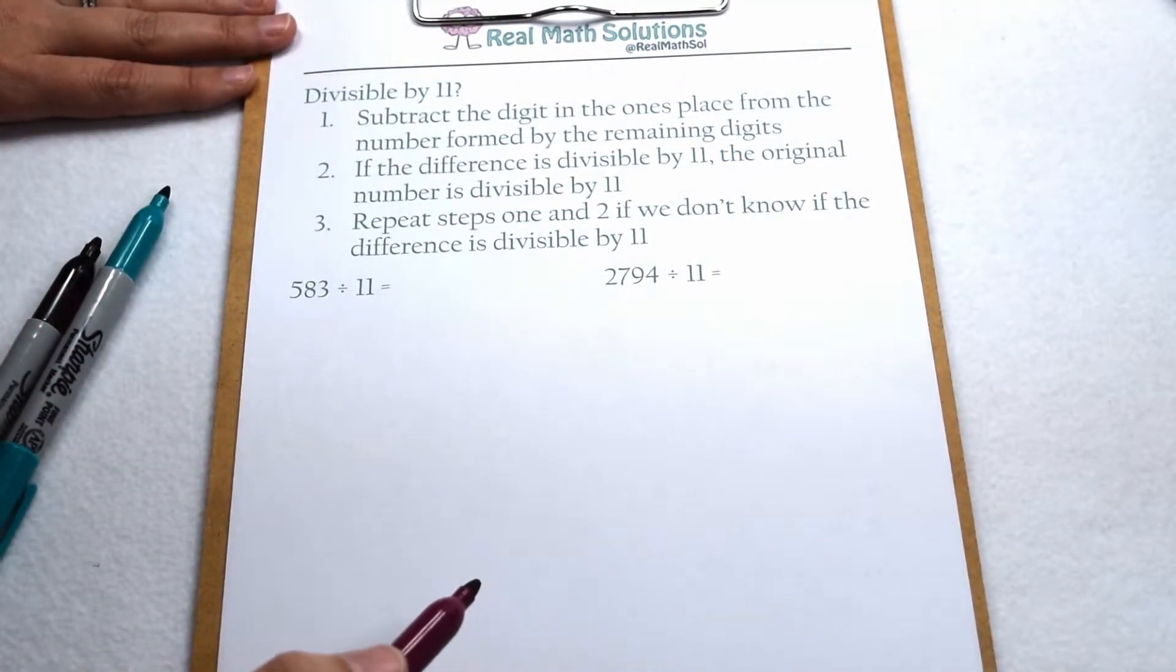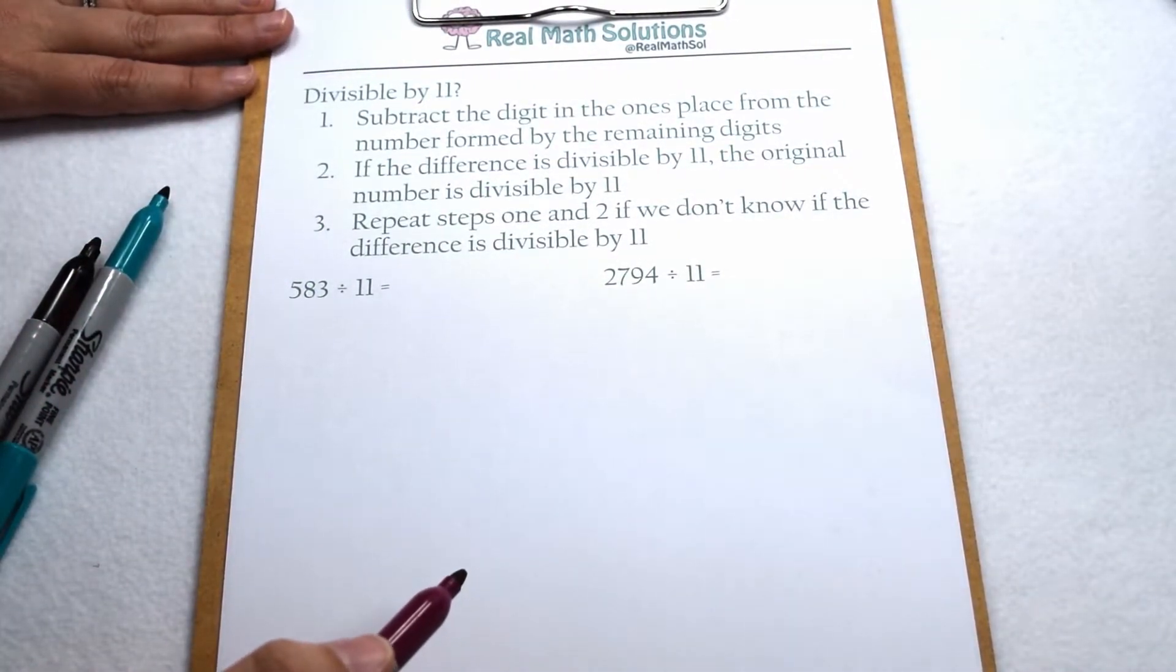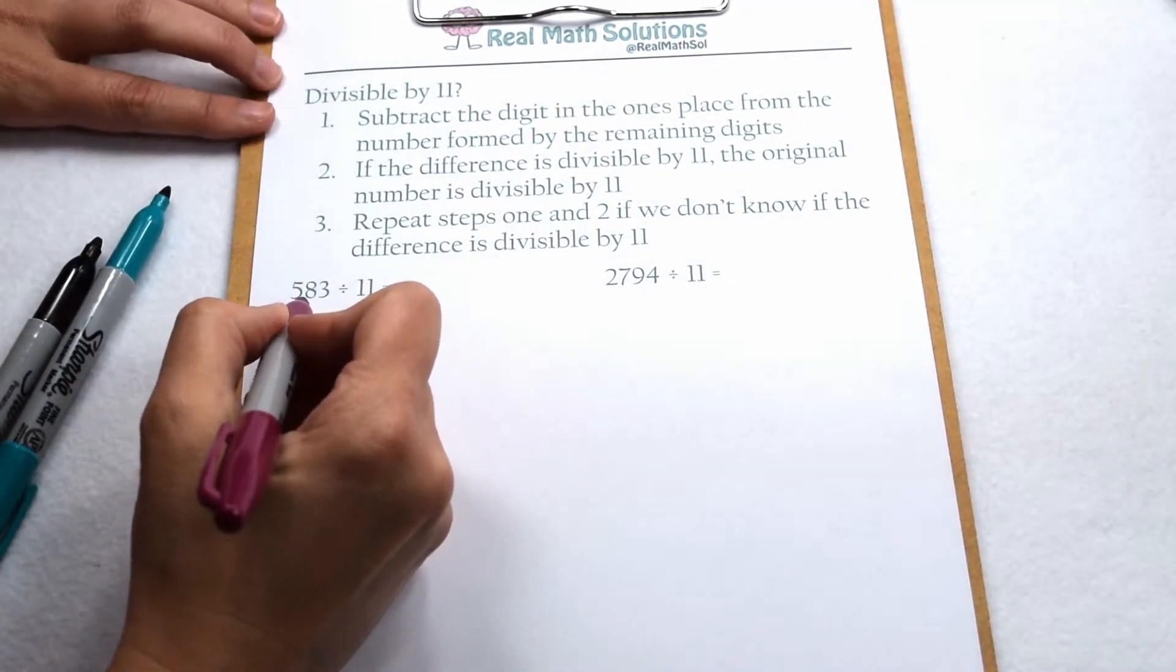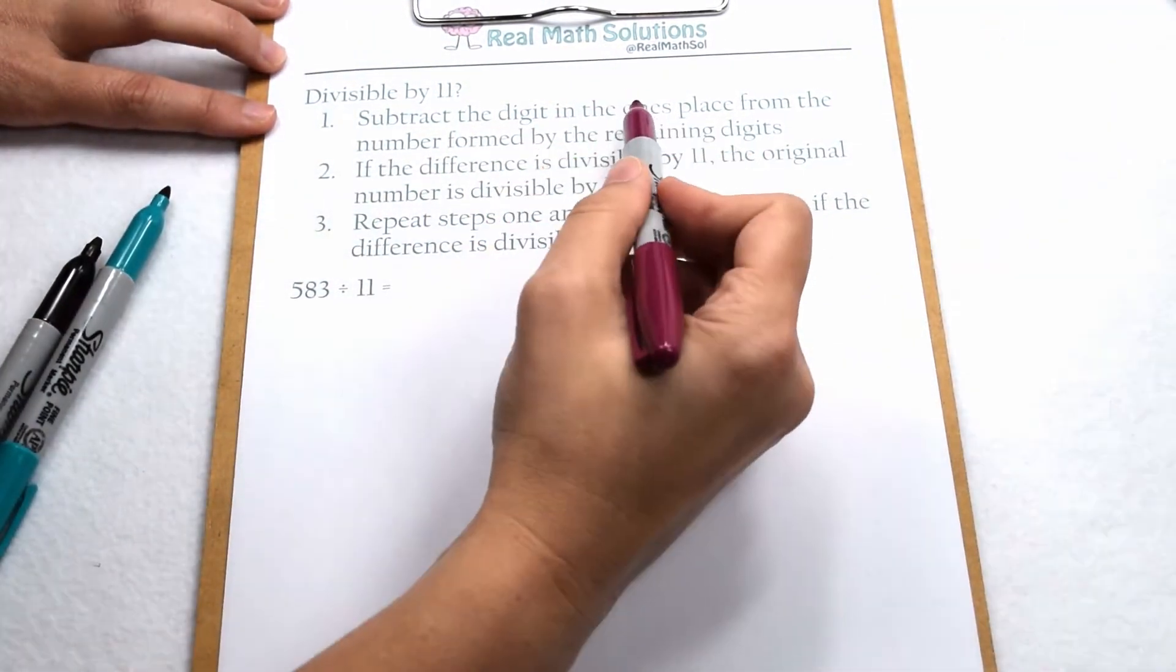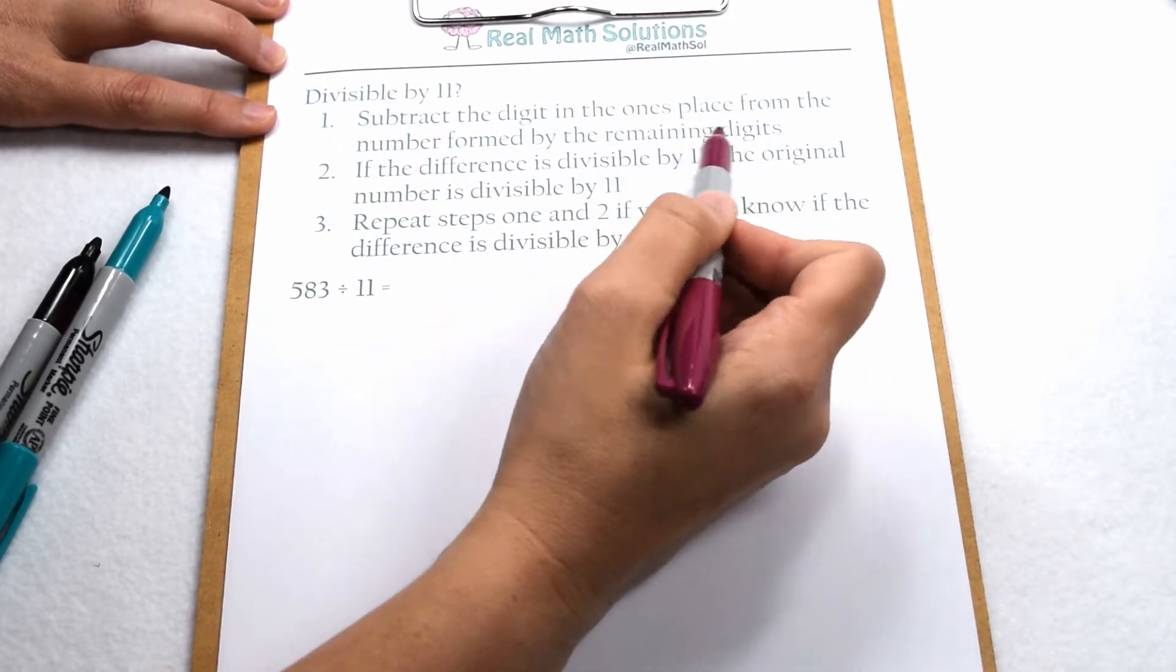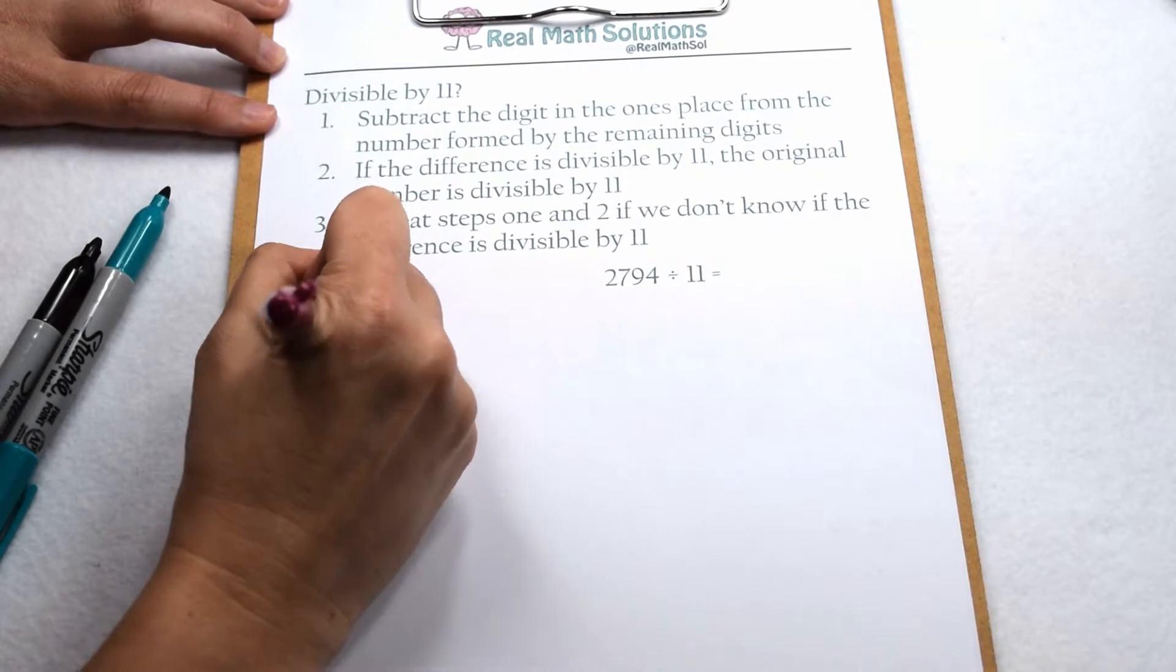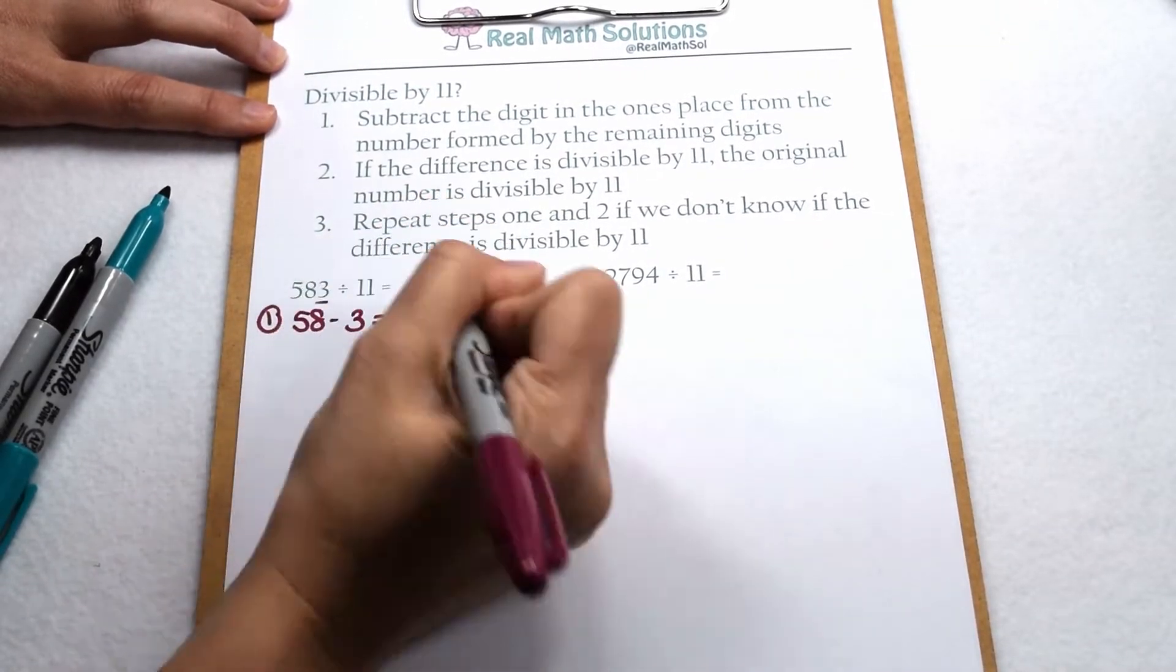What happens when our dividend is larger than 100? How do we check to see if it's still divisible by 11? Well, there's a few steps we can follow. For something like 583 divided by 11, the first thing we need to do is subtract the digit in the ones place from the number formed by the remaining digits. So that means for 583, I'm going to have to do 58 minus 3.